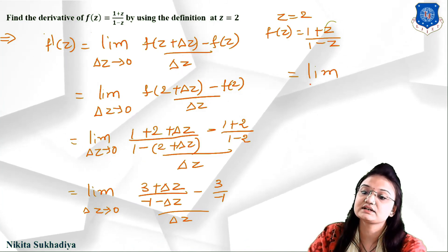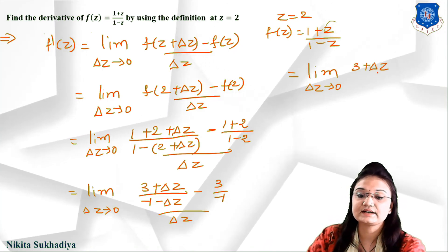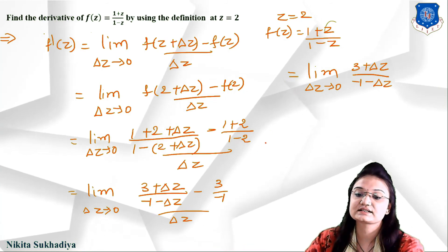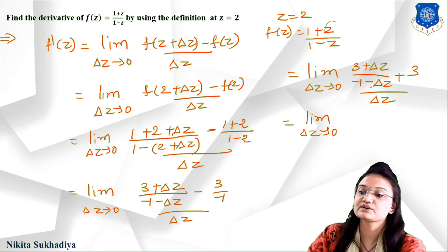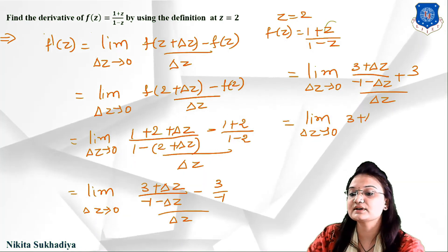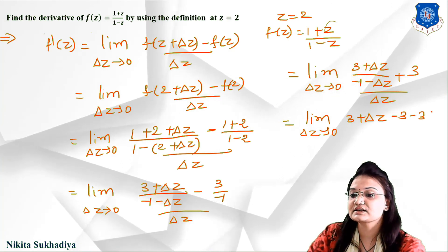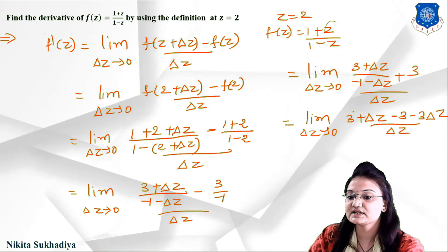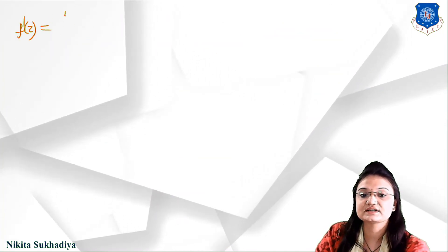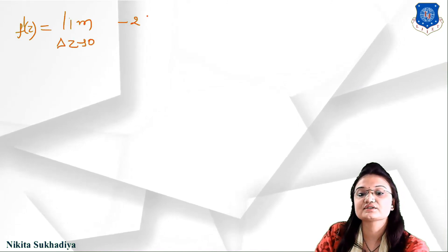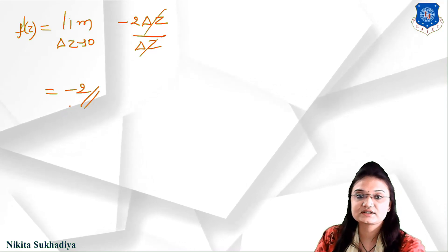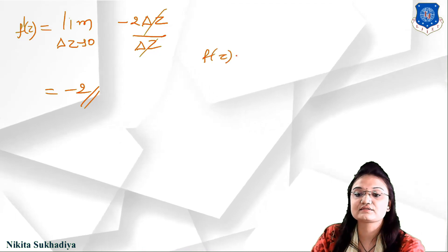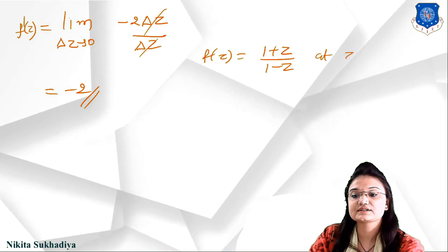We get lim(Δz→0) [(3 + Δz)/(−1 − Δz) + 3] / Δz. By cross multiplication, the numerator becomes (3 + Δz) − 3(1 + Δz) under (−1 − Δz)(1), which simplifies to (3 + Δz − 3 − 3Δz) = −2Δz. So f'(z) = lim(Δz→0) (−2Δz / Δz) = −2. The final derivative of f(z) = (1+z)/(1−z) at z = 2 is −2.